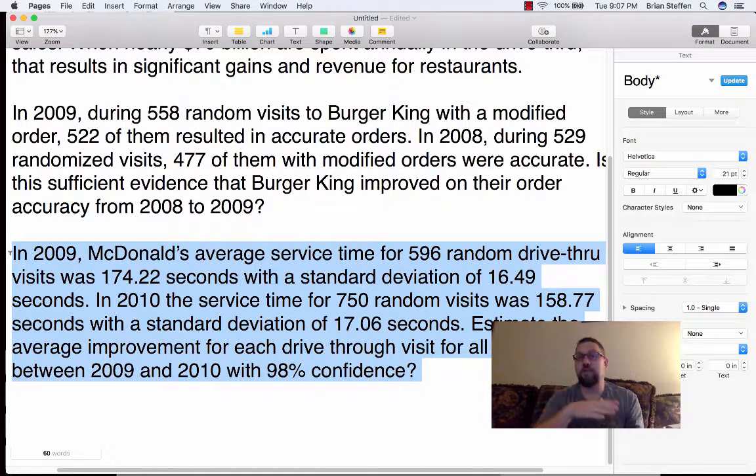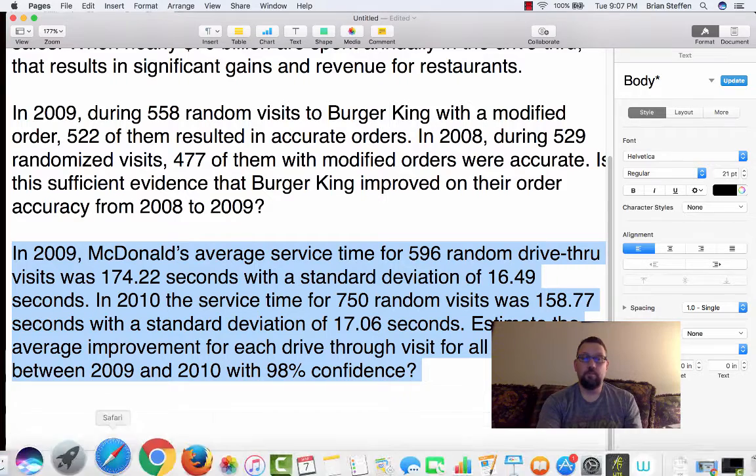In 2010, the service time for 750 randomized visits was 158, so you can see it's definitely less time, which is great, and standard deviation of 17.06. We're asked to estimate the average improvement for each drive-thru visit for all visits between 2009 and 2010 with 98% confidence. So what we're asked to do here is actually to construct a confidence interval for the difference of improvement.